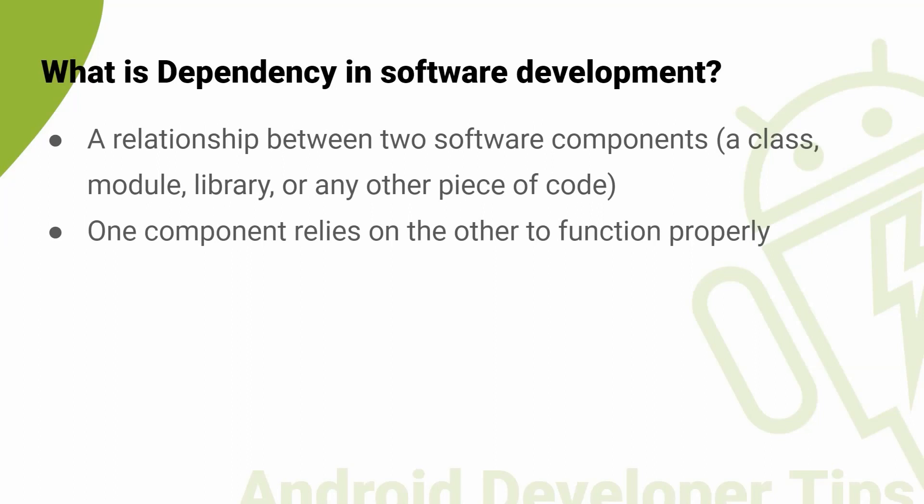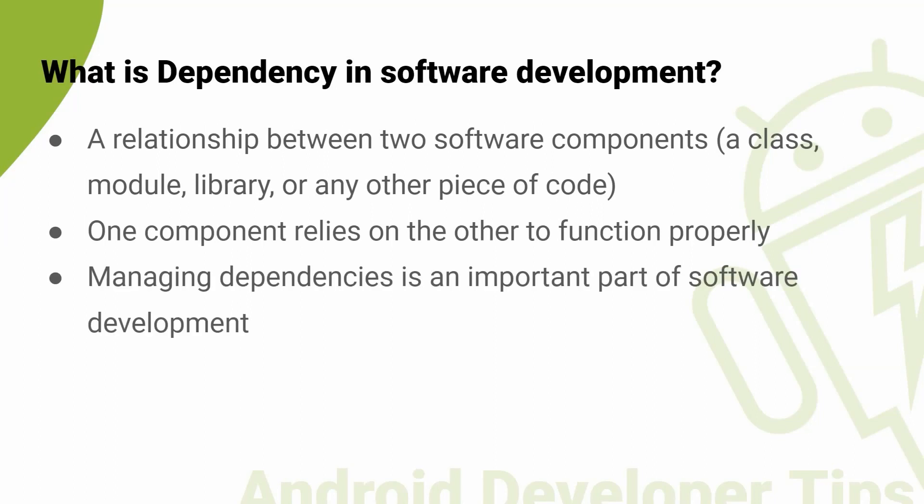For example, if you have a class that uses a database connection to retrieve data, the class has a dependency on the database connection. The database connection is a separate component that the class relies on to function properly. Managing dependencies is an important part of software development as it can impact the quality, maintainability, and scalability of the application.